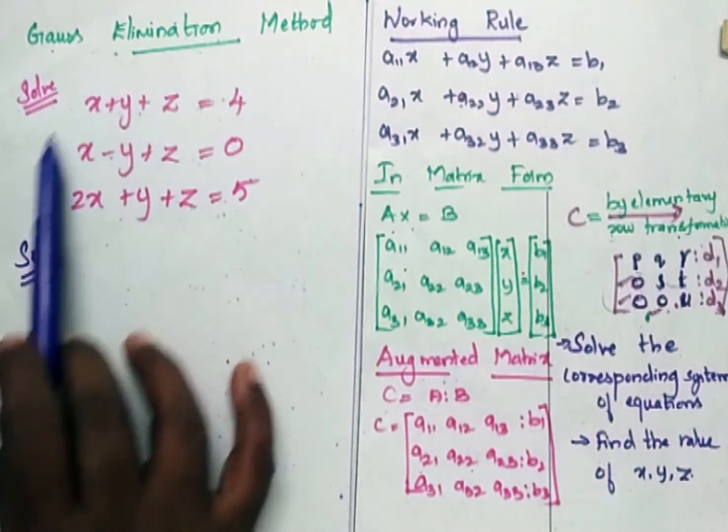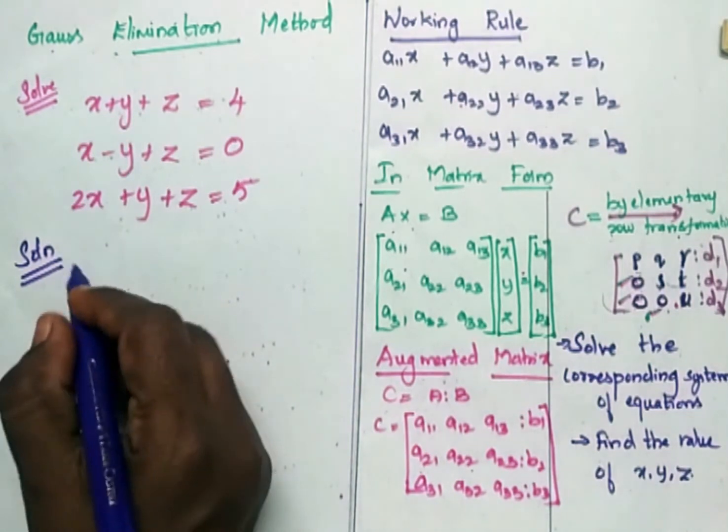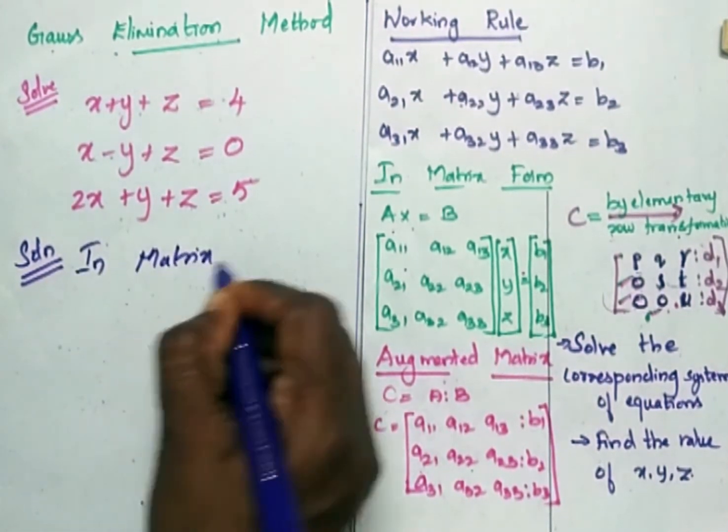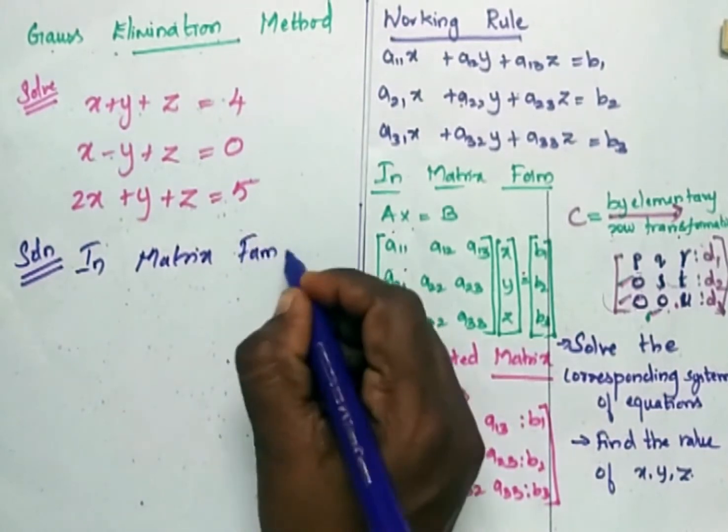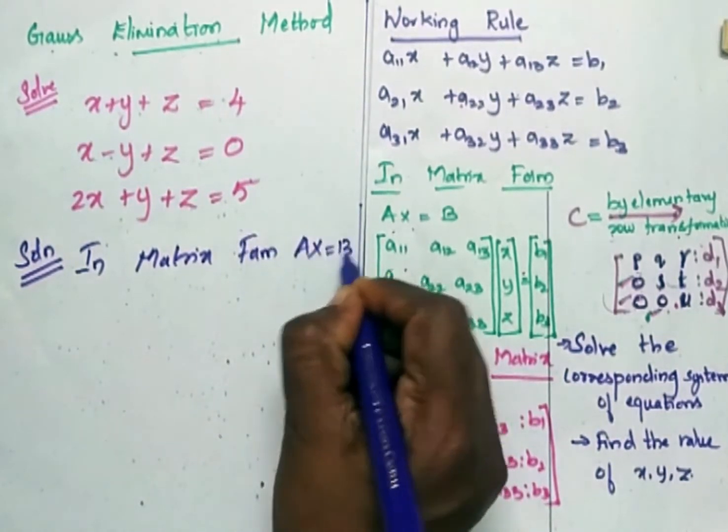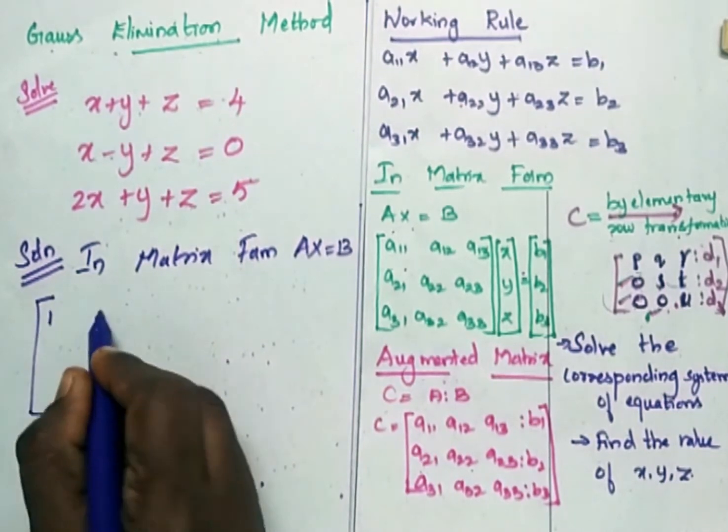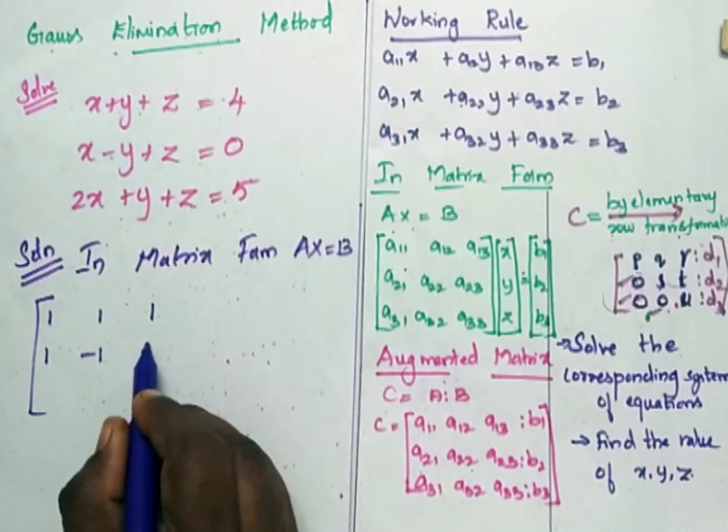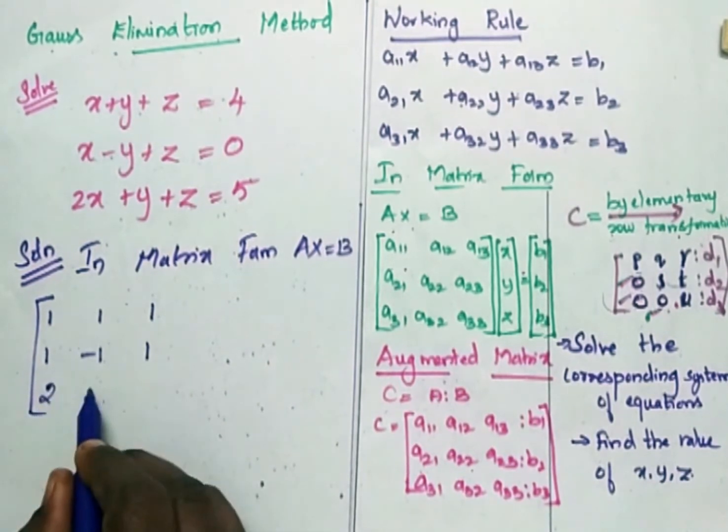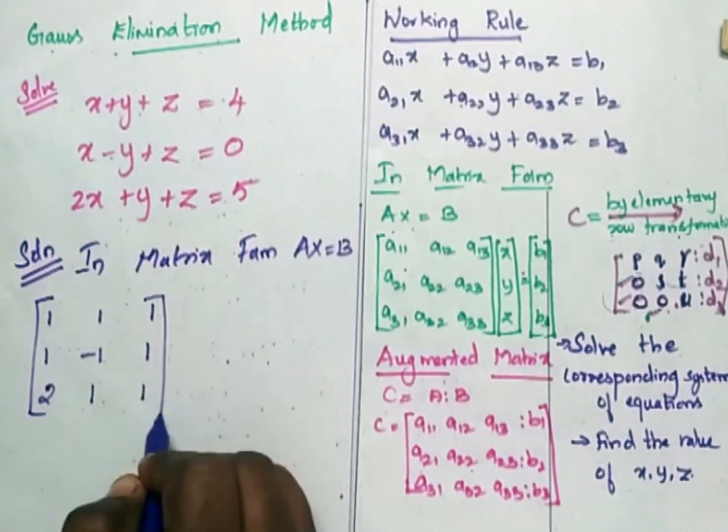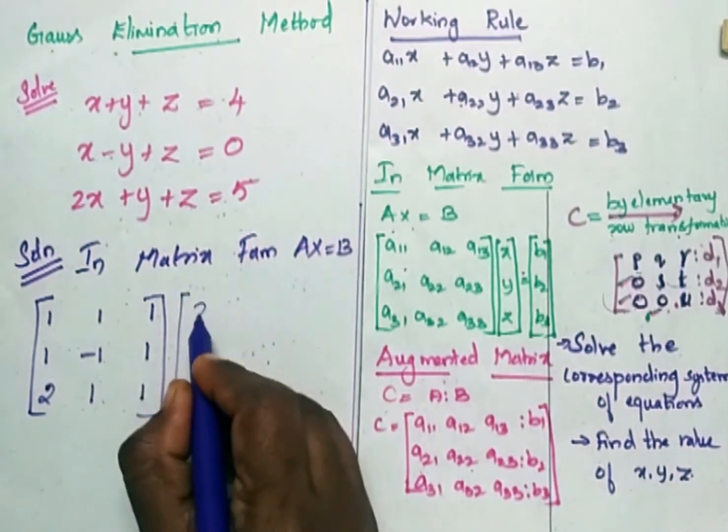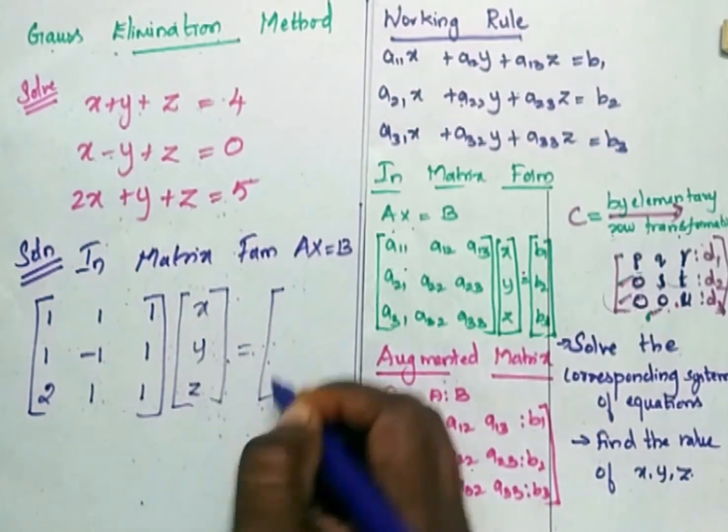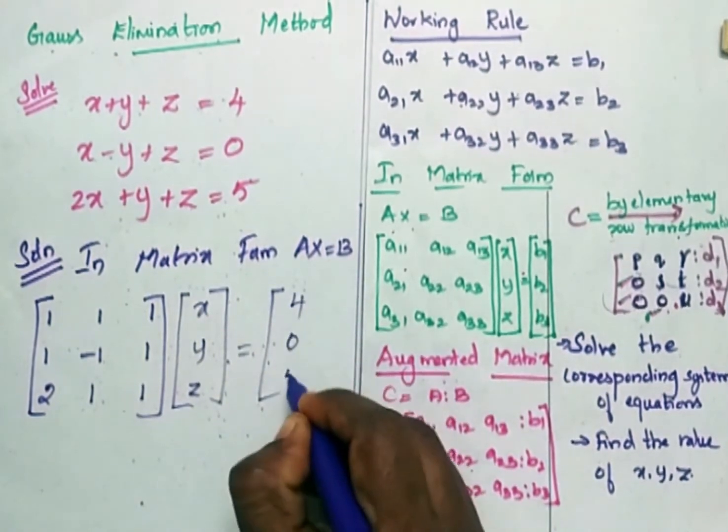Now let us write these system of equations in the matrix form. In matrix form, Ax is equal to B. Now it is 1, 1, 1, 1, minus 1, 1, 2, 1, 1. Now my X is X, Y, Z. My B is 4, 0, 5.